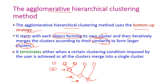The agglomerative algorithm terminates either when a certain clustering condition defined by the user is reached, or when all data items have been merged into a single cluster. When either of these two conditions is met, the algorithm terminates. This is agglomerative hierarchical clustering.